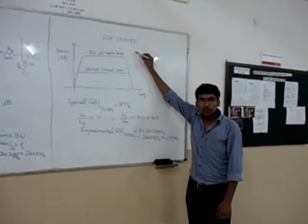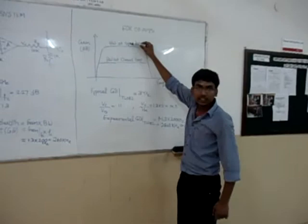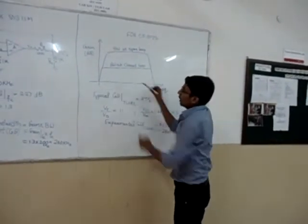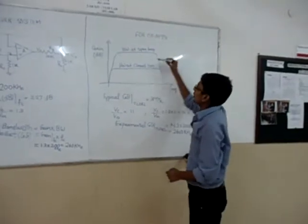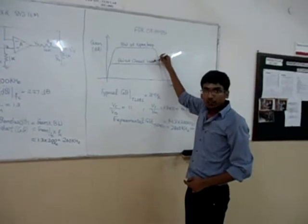For general opamps, in open loop condition bandwidth is narrow with a higher gain as compared to closed loop with a wider bandwidth and a lower gain. The area under the curve at open loop is equal to the area under the curve at closed loop.